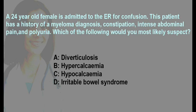Moving on to the next question. A 24-year-old female is admitted to the ER for confusion. This patient has a history of myeloma diagnosis, constipation, intense abdominal pain, and polyuria. Which of the following would you most likely suspect?